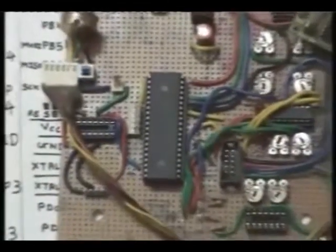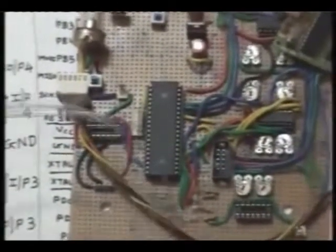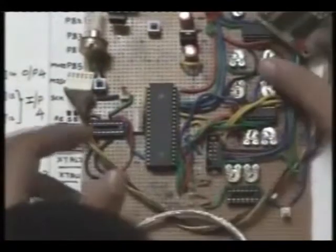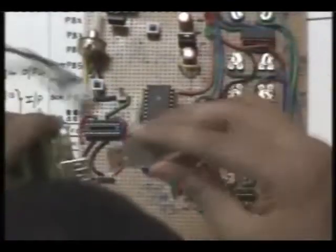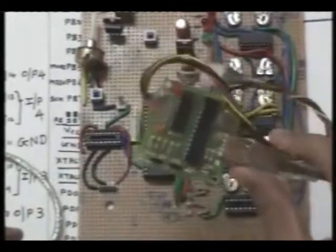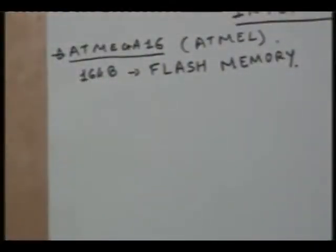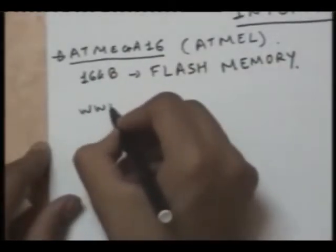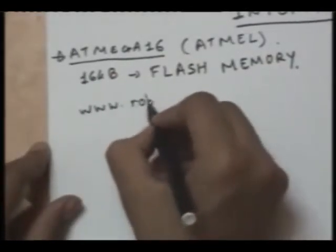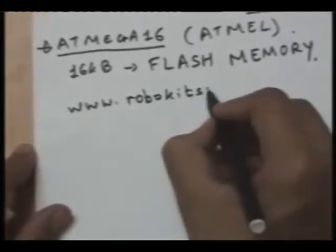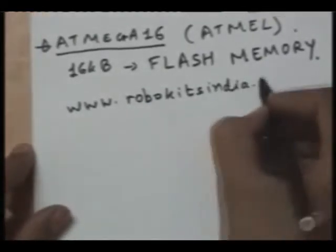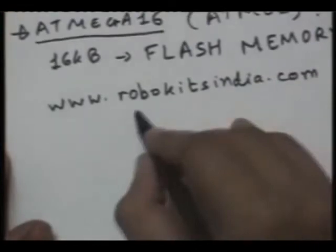They also provide one USB code with it. One end of USB must be connected with a programmer and other to your computer. You can have more information about this controller, about this programmer from the site RobokitsIndia.com.